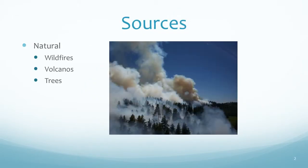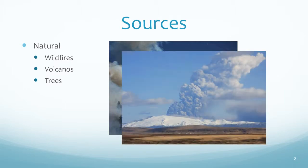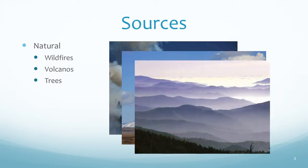This definition of air pollution did not specify a source of contamination because it can come from humans as well as nature. In fact, wildfires and volcanoes have been polluting the atmosphere long before humans came around. The Great Smoky Mountains get their name from the pollution released by its trees.